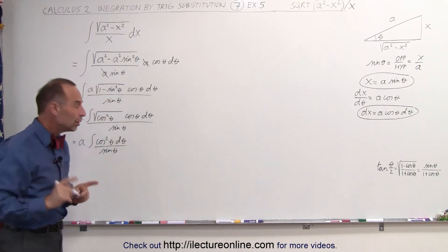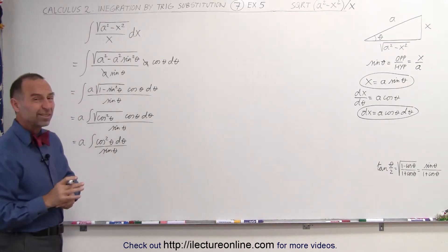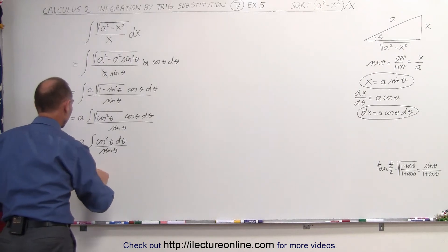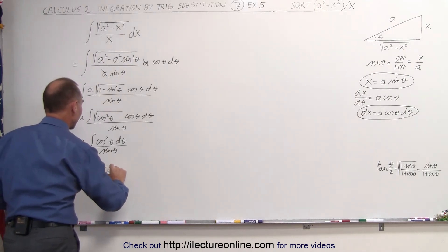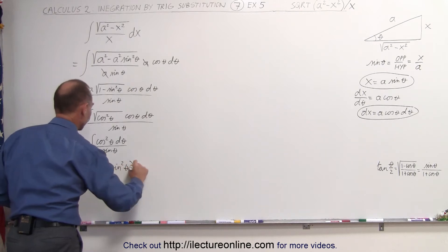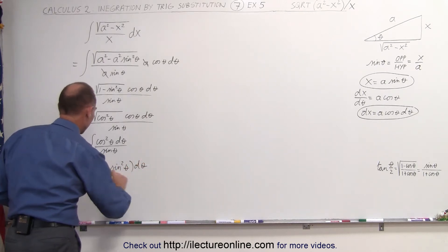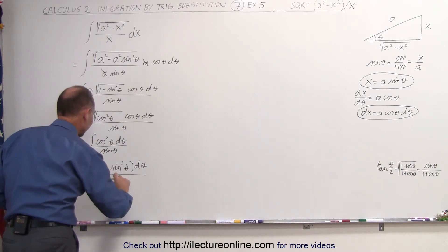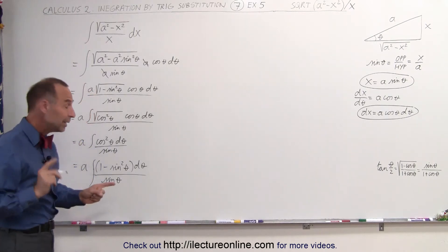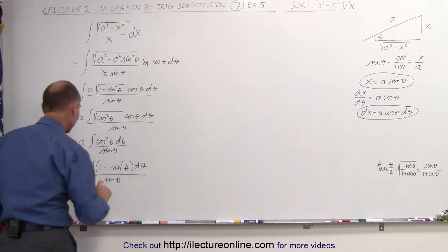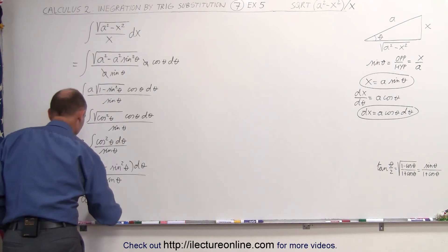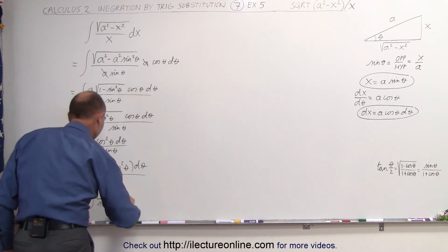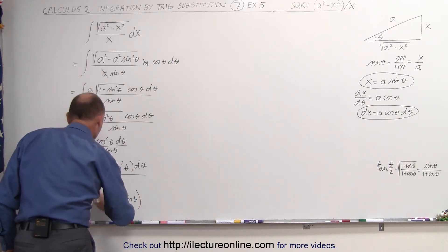And now it comes down to: do we know how to integrate this? One of the tricks is to write this as a times the integral of one minus sine squared of theta, times dθ, divided by the sine of theta. If we divide the denominator into the numerator, we get a times the integral of one over sine of theta, minus sine squared divided by sine — which is simply the sine of theta — dθ.